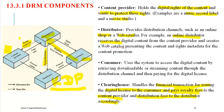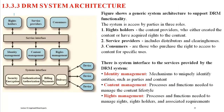This forms a complete cycle: the content provider creates the content, distributors sell and market it on their websites, the clearing house handles all financial transactions, and the consumer buys and pays. You can see the money flow — from the consumer to the clearing house, then royalty fees go to the content provider, and distribution payment goes to the distributor. This is how the DRM cycle works.